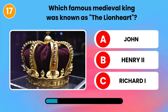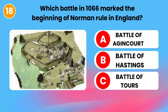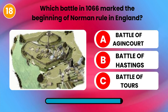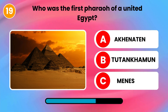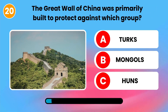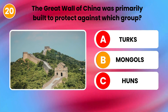Which famous medieval king was known as the Lionheart? Richard I. Which battle in 1066 marked the beginning of Norman rule in England? Battle of Hastings. Who was the first pharaoh of a united Egypt? Menes. The Great Wall of China was primarily built to protect against which group? Mongols.